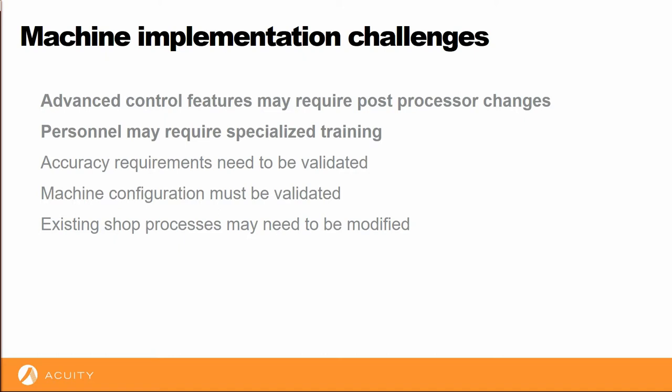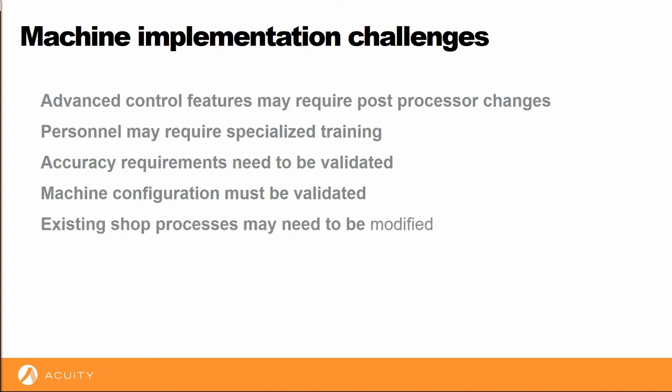The machine must be validated to ensure its accuracy and repeatability are in spec. Finally, it's possible that your existing shop processes will need to be re-evaluated. The way you manage tools, shop floor documents, and inspections may not be sufficient to achieve your goals.